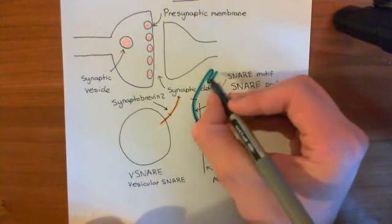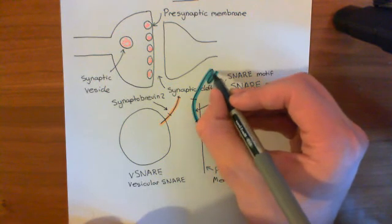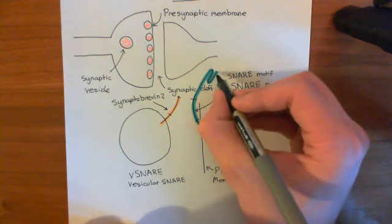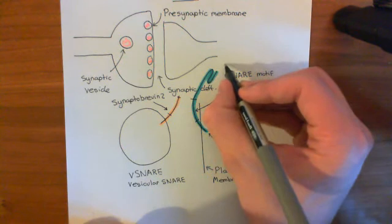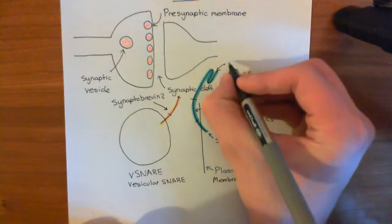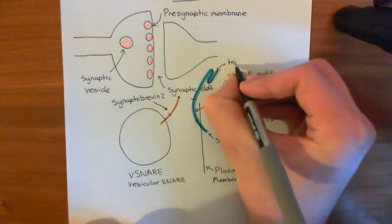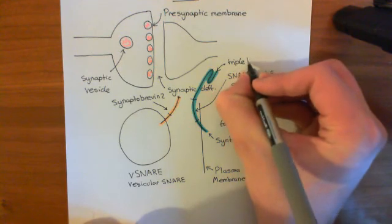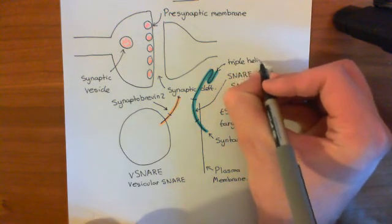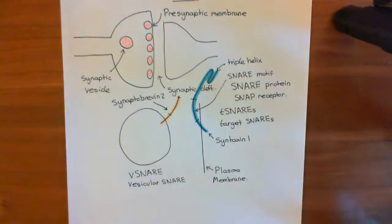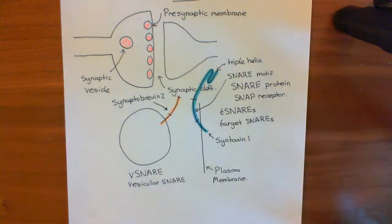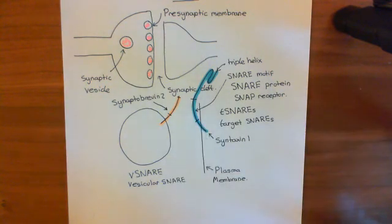The other portion of syntaxin-1 has three alpha helices all folded back on one another — this is known as the triple helix, so called because there are three helices. This triple helix is in the cytoplasm, and syntaxin-1 is the first example of a T-SNARE associated with the plasma membrane.